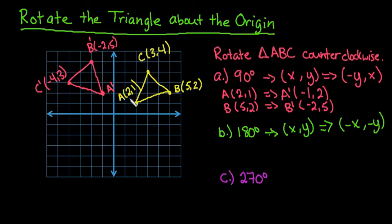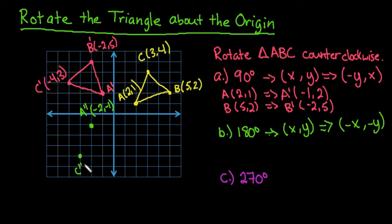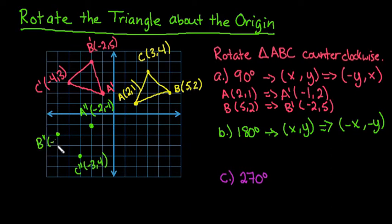So for A — I'm going to call this double prime because it's my second example — if I change both signs, it would be (-2, -1). For C, we would be at (-3, -4). And B would be at (-5, -2). Then you would just connect your lines.